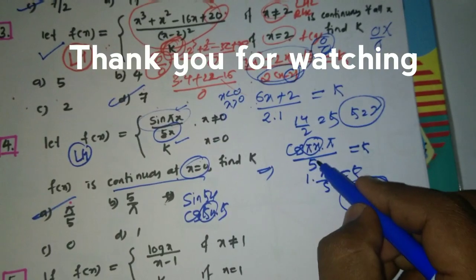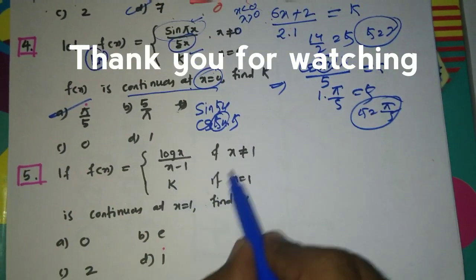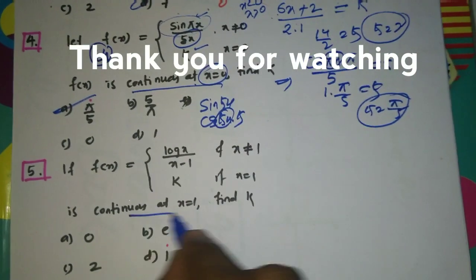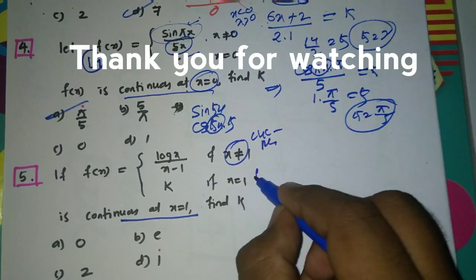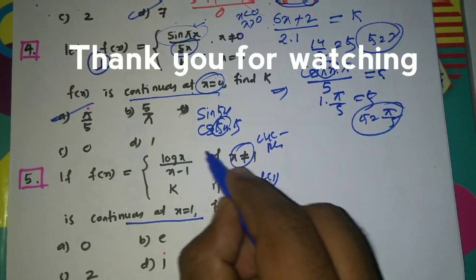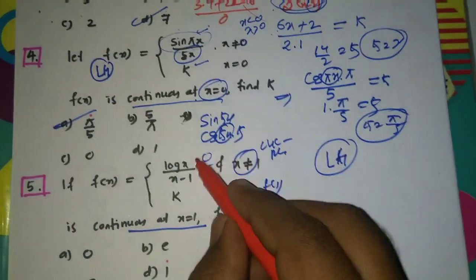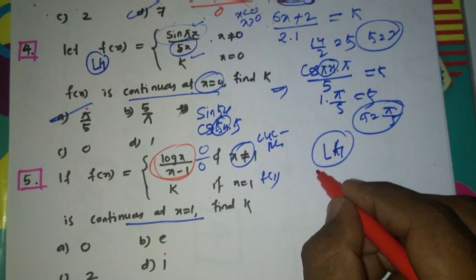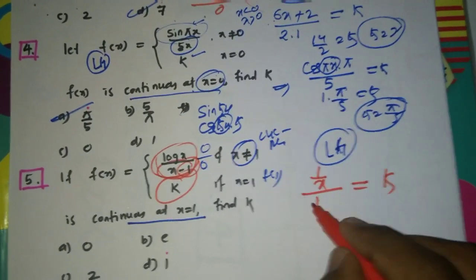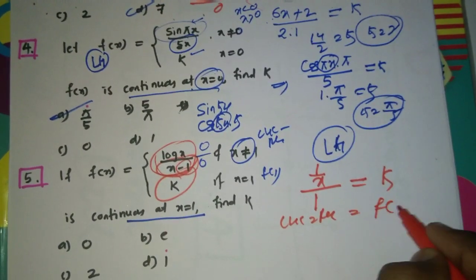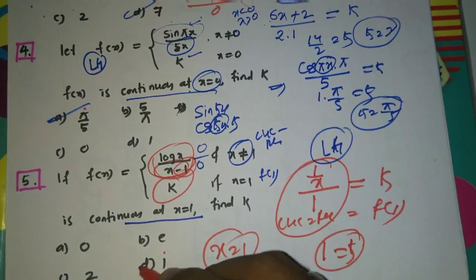If you get 0/0 again after one differentiation, apply L'Hôpital's rule once more. Question 5: f(x) = log(x)/(x−1) when x ≠ 1, and k when x = 1. It is continuous at x = 1. Putting x = 1: log(1) = 0 and 1−1 = 0, so 0/0 form. Apply L'Hôpital's rule: derivative of log(x) is 1/x, derivative of (x−1) is 1. At x = 1: (1/1)/1 = 1 = k. Hence option D is correct.